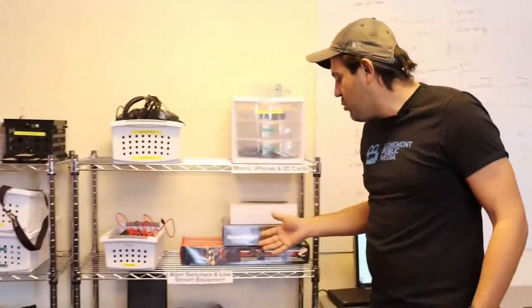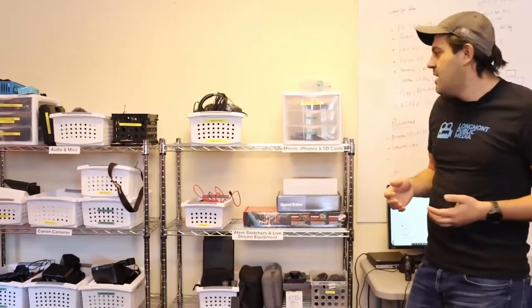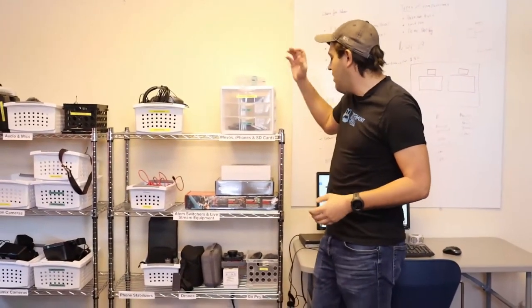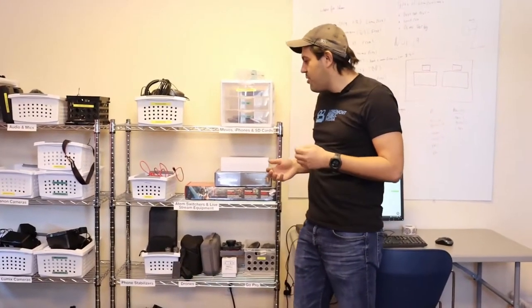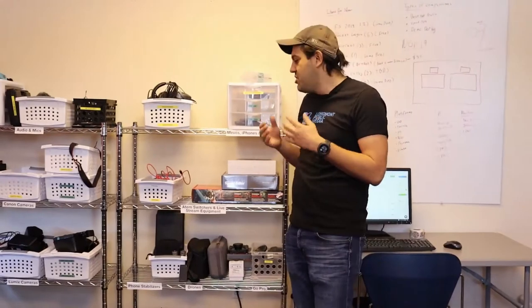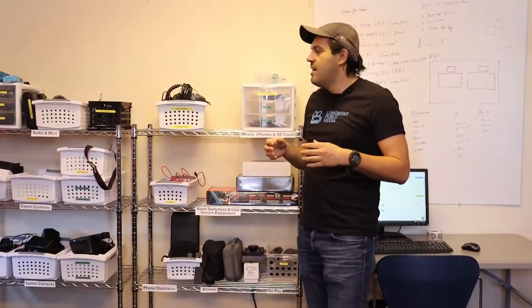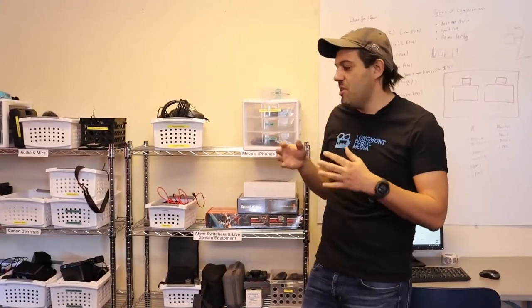Right behind you, if you want to follow me this way, we've got some ATEM switchers for live streaming. We've got all kinds of headphones, drones, camcorders, Canon Rebel cameras, Lumix G85s, tons of different lav and wireless mic options as well as a bunch of different tripods for you to use.